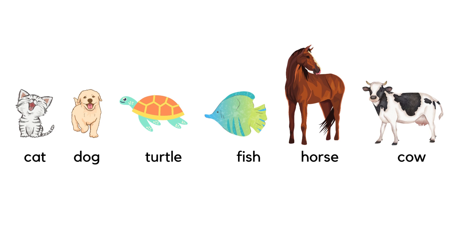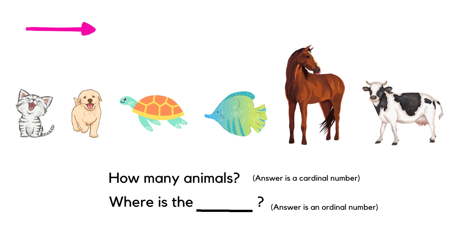Let's review these animal names: cat, dog, turtle, fish, horse, cow. How many animals? We're counting, so we need a cardinal number — there are six animals. How many of the animals have four legs? Five animals have four legs. Now let's talk about order: where is the fish? The fish is fourth. The cat is first, the dog is second, the turtle is third, the fish is fourth.